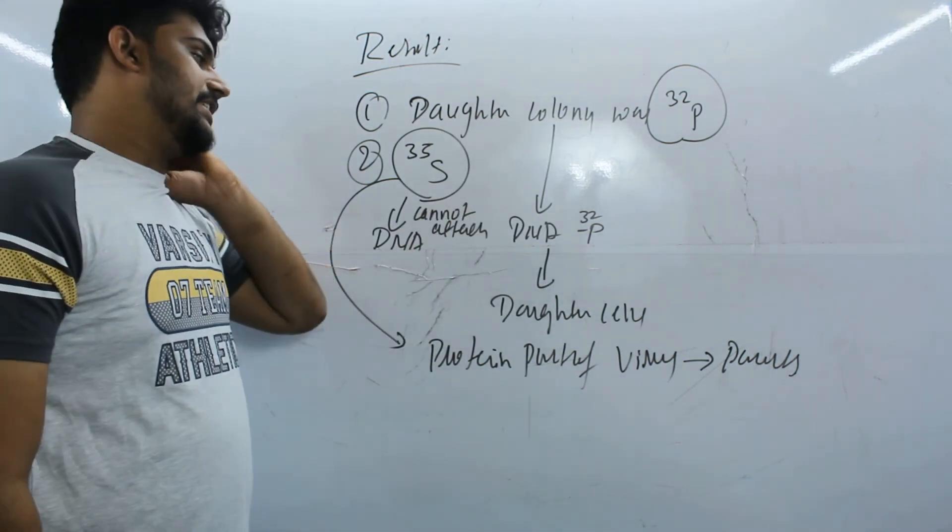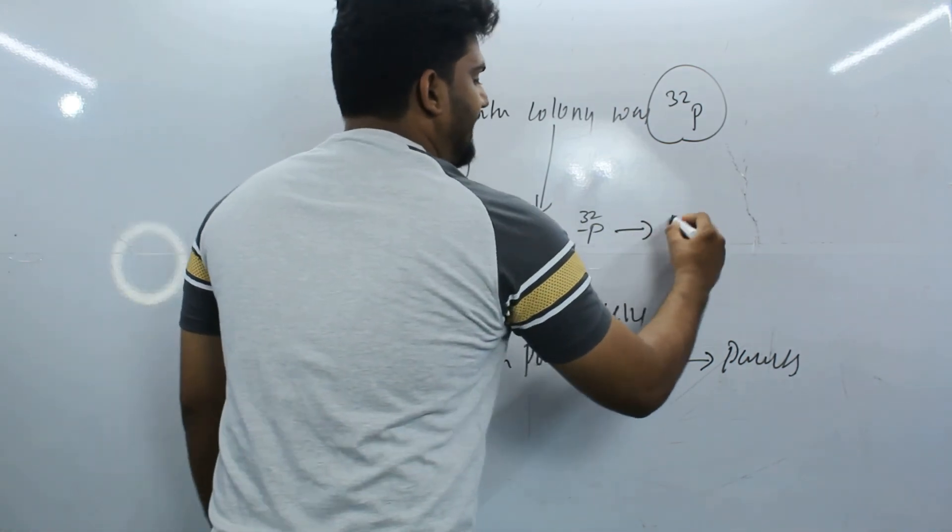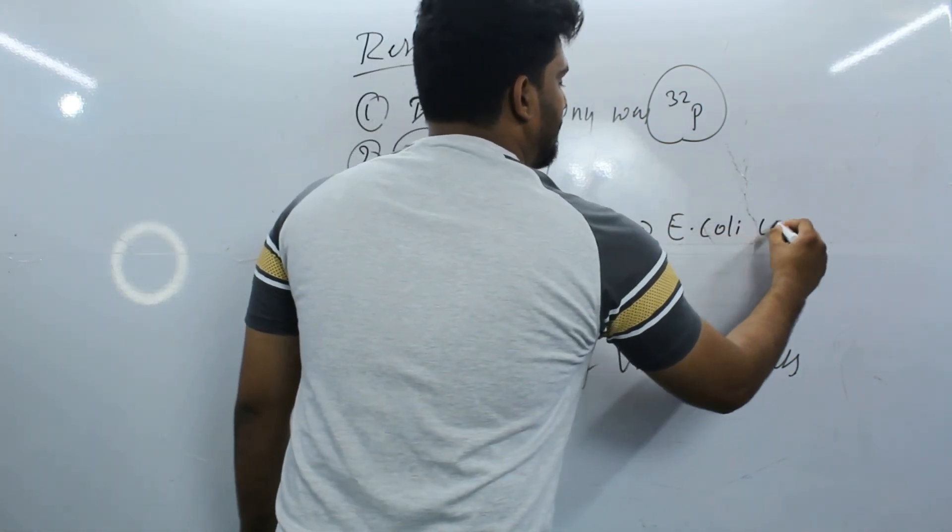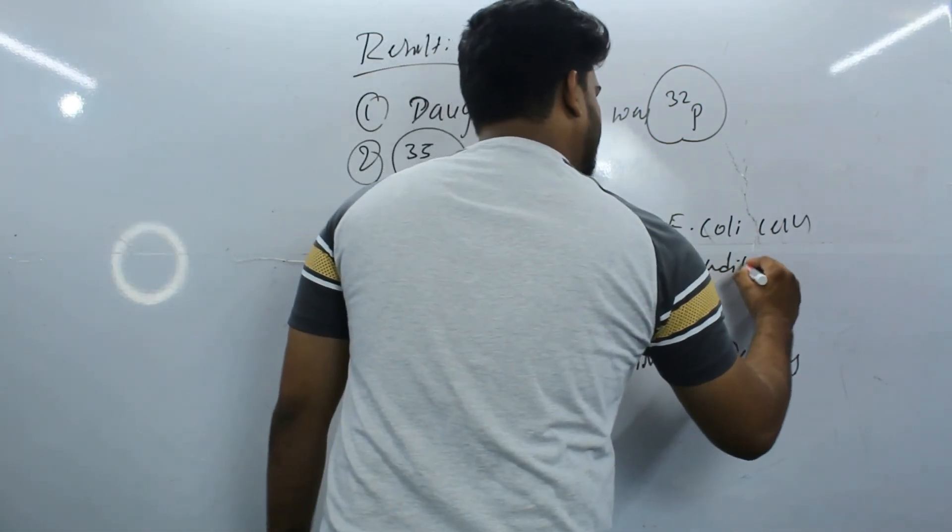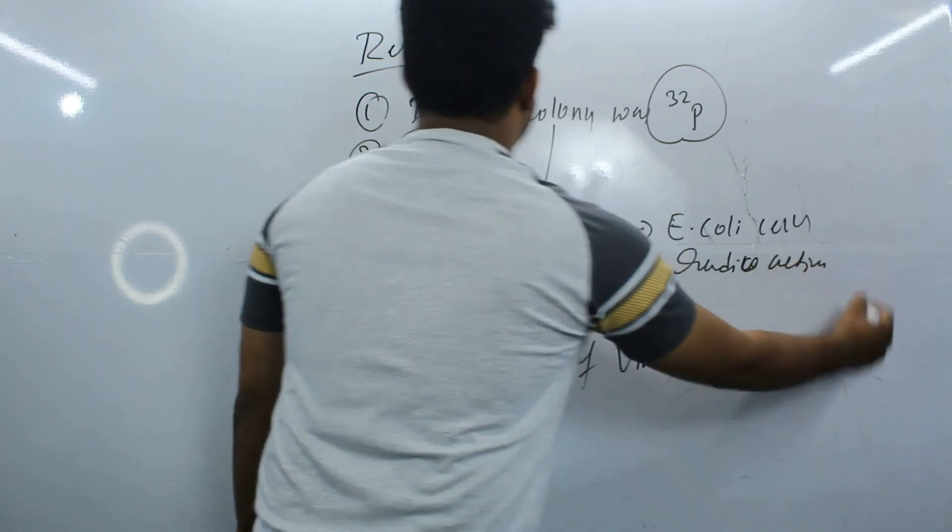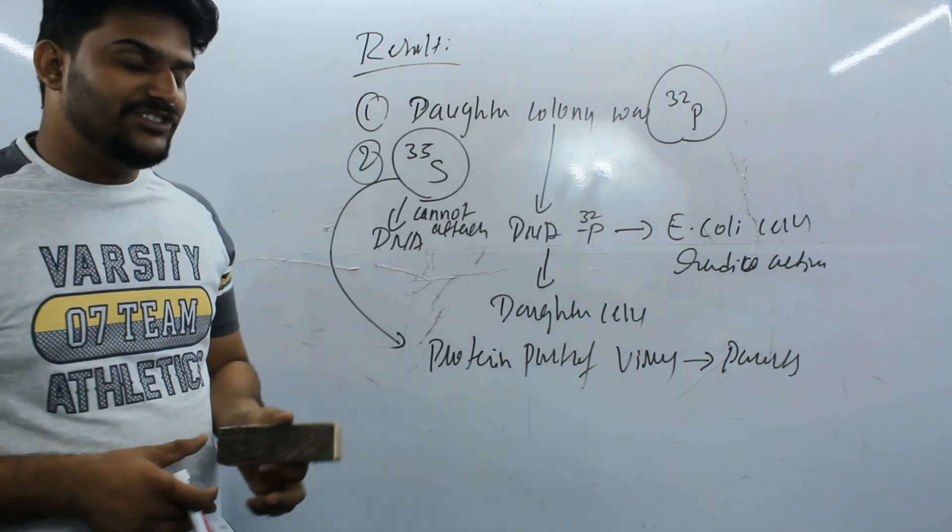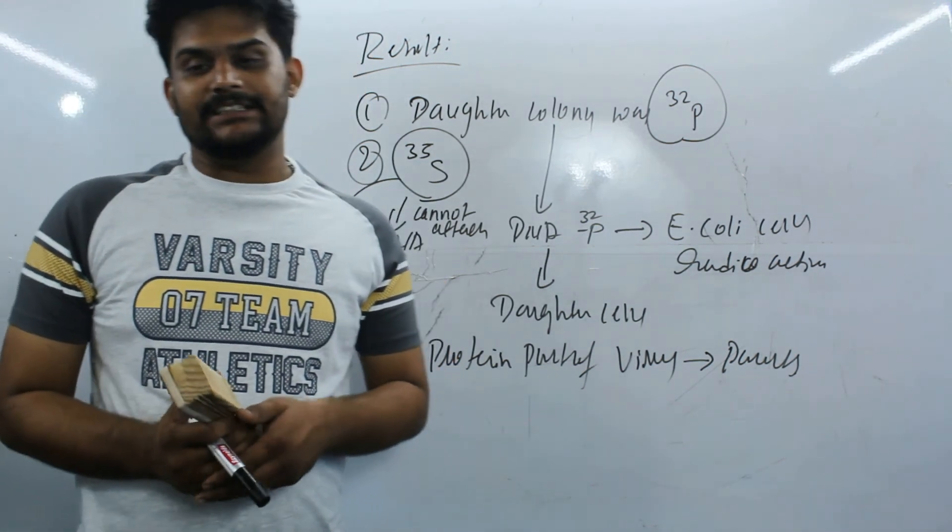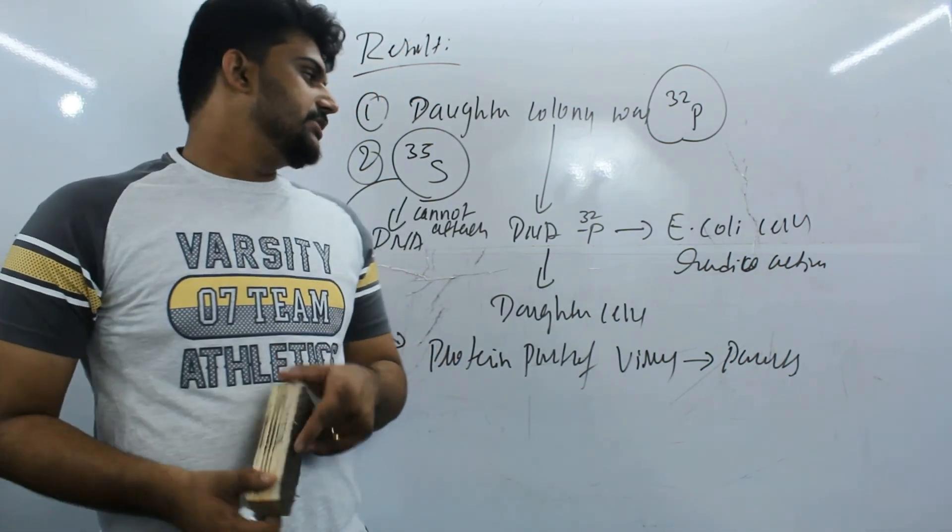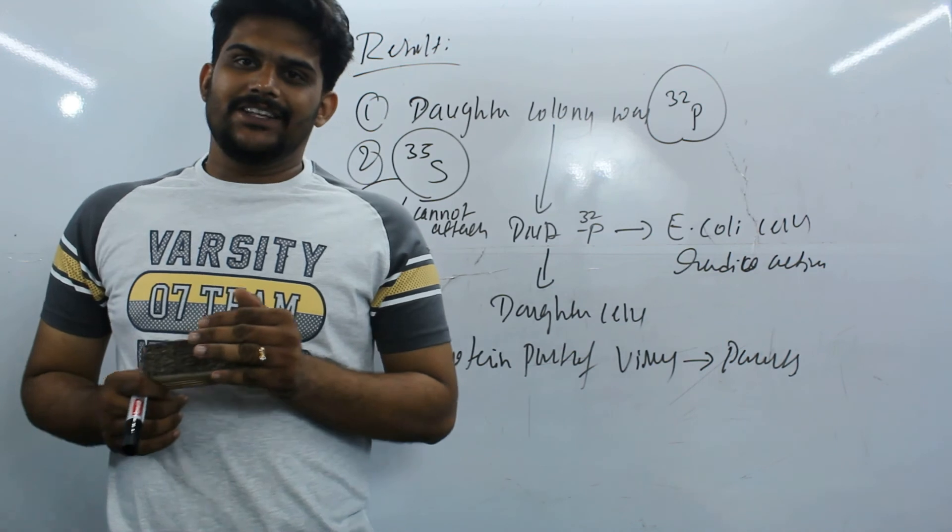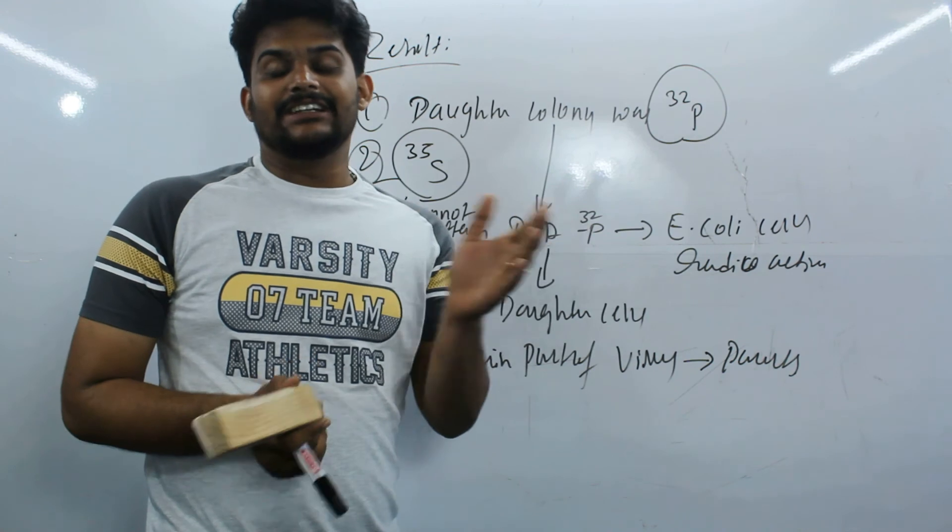So they proved by this that DNA is the genetic material. The complete E. coli cell became radioactive. Yes, so this is what the result has been put forward by Martha Chase and Alfred Hershey. I hope you understood this very good point of proving DNA as genetic material.